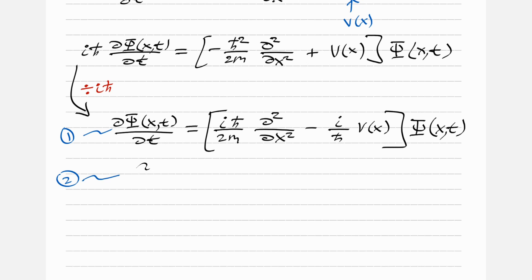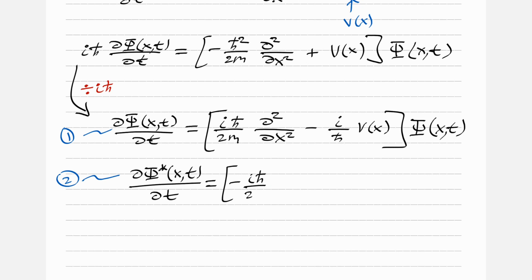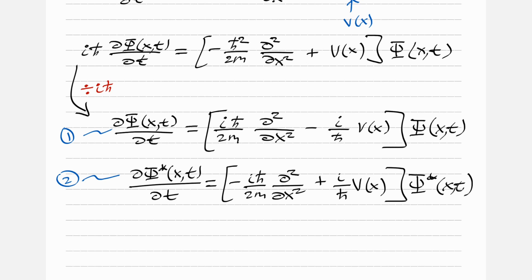Now let's take the complex conjugate of both sides. We get: d psi star(x,t)/dt equals minus i h-bar over 2m times d squared/dx squared plus i over h-bar times V(x), all acting on psi star(x,t).